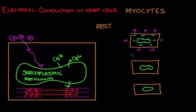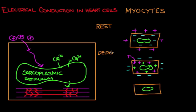What happens right before contraction? The positive ions enter the cell, and the sarcoplasmic reticulum releases calcium ions. This makes the inside of the cell more electropositive and the outside relatively electronegative — this is called depolarization. That's a change in membrane potential after an influx of positive ions, making the intracellular membrane potential more positive.